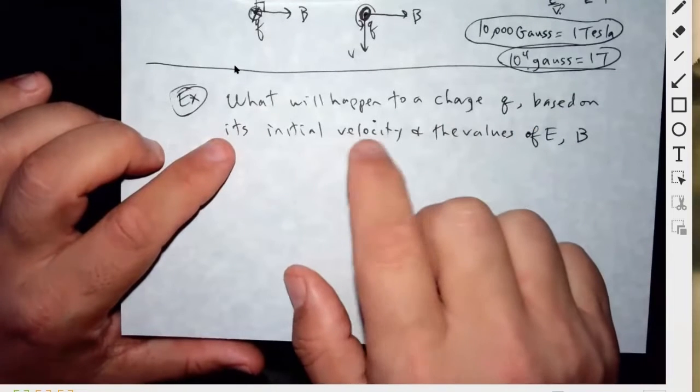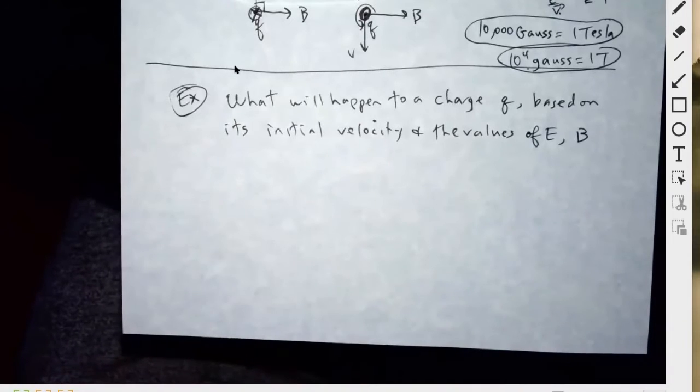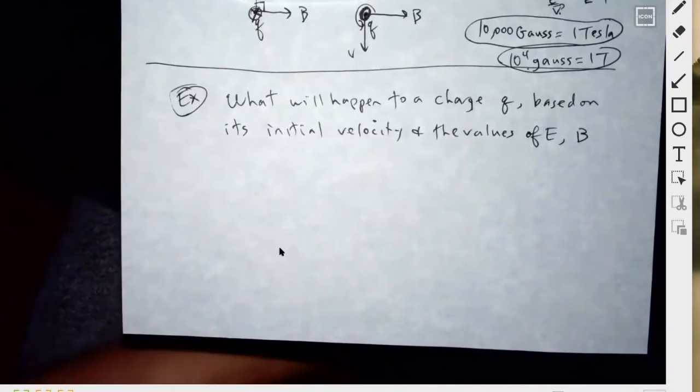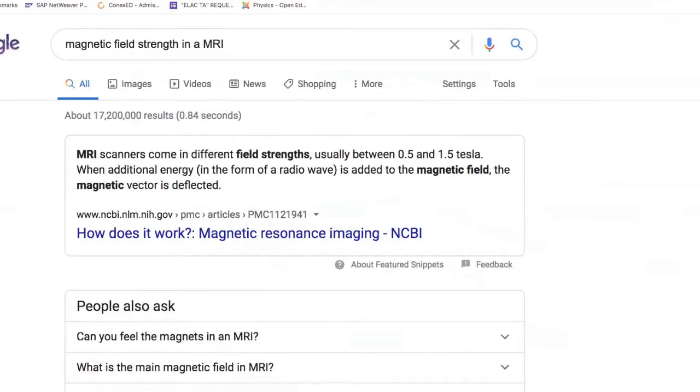Based on its initial velocity and the values of the different values of E and B that we could impose on this charge, right? So now go back to that.